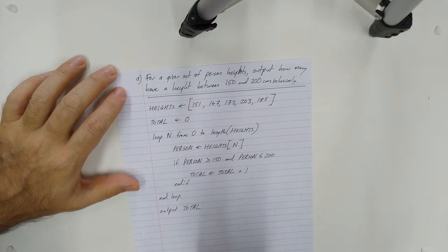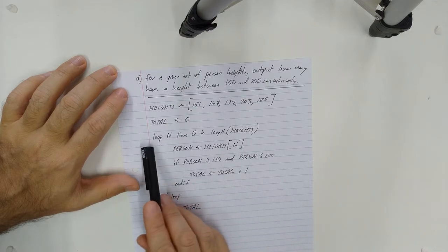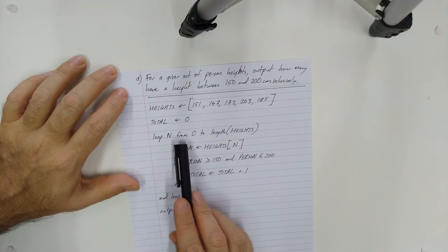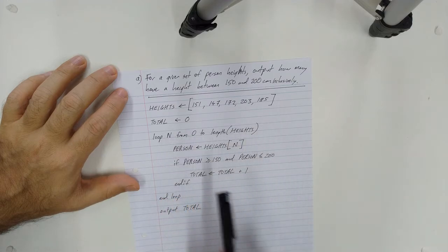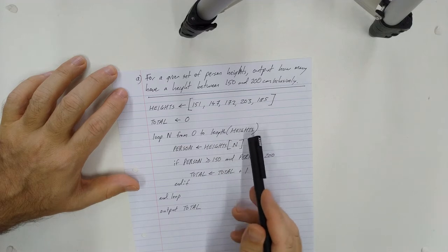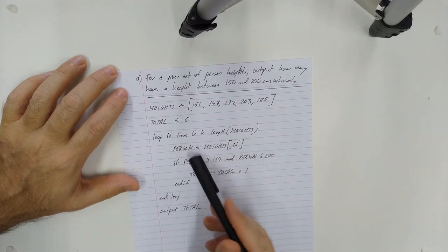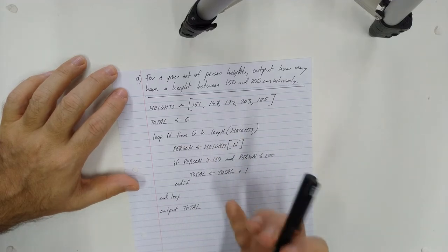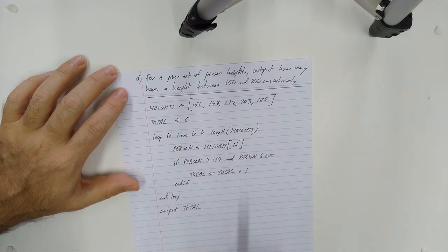Because if the programming language you were used to uses the word for, I could have said for n from zero to length of heights. And I could have done heights dot length instead. So long as it's clear what your intent is, then you are okay.